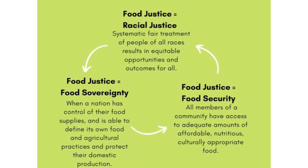Food justice is often associated with racial justice because systemic fair treatment of people of all races results in more equitable opportunities and outcomes related to food. Food justice is also about food sovereignty, which is the idea that people should have the choice for what to eat, how to grow it, and where it comes from. And food justice is also about food security, which means making sure that everybody has access to adequate amounts of affordable, healthy food that is also culturally appropriate.